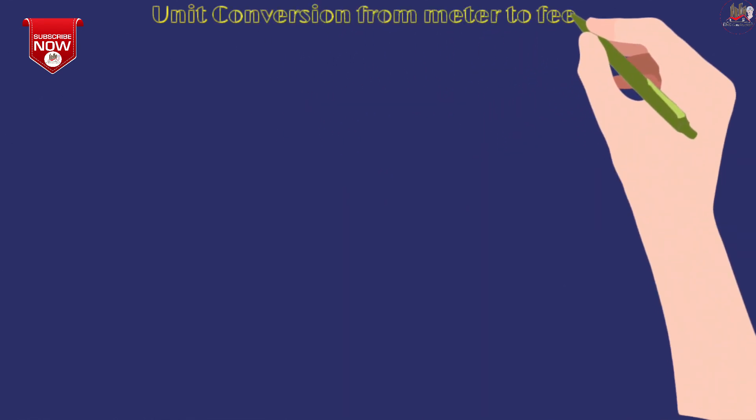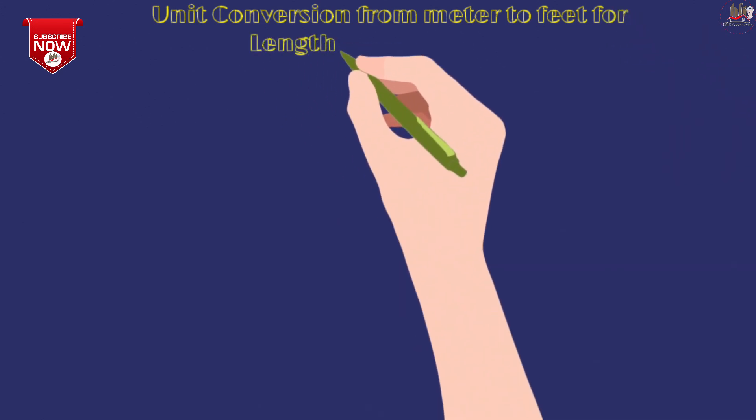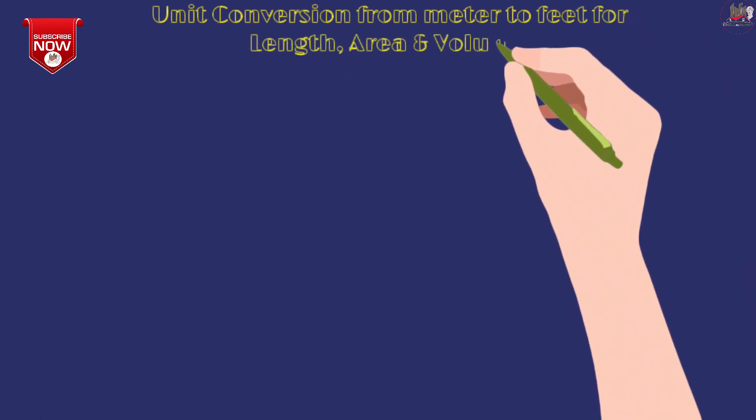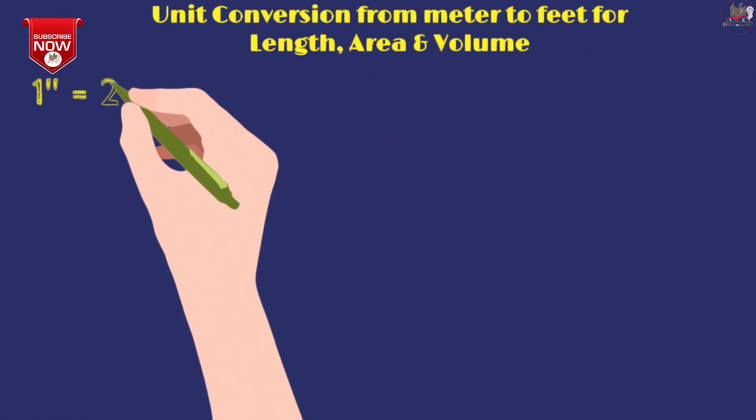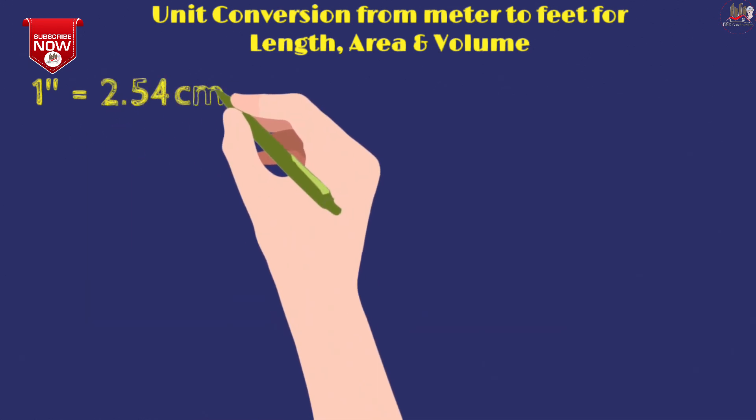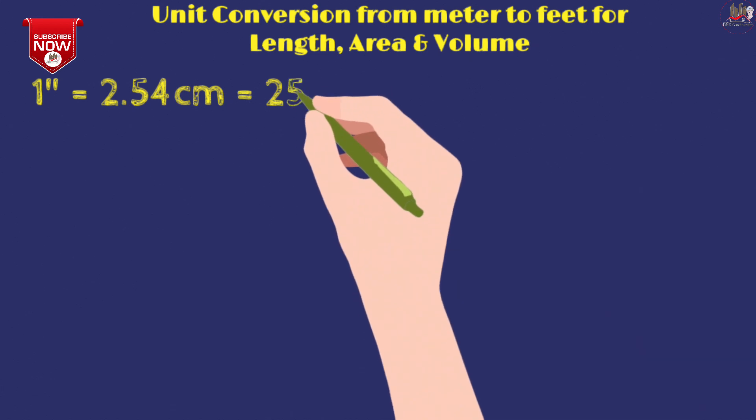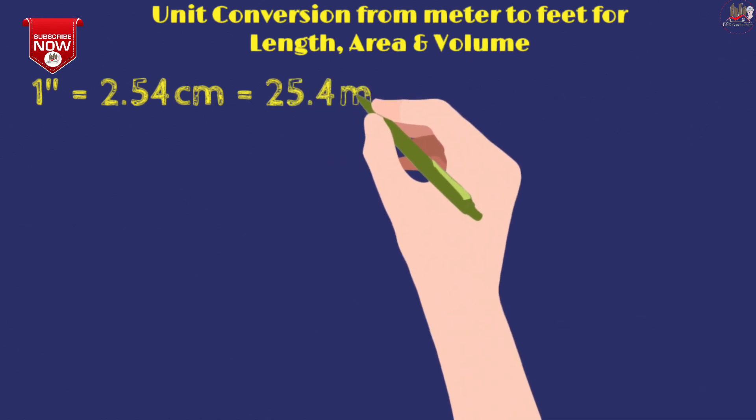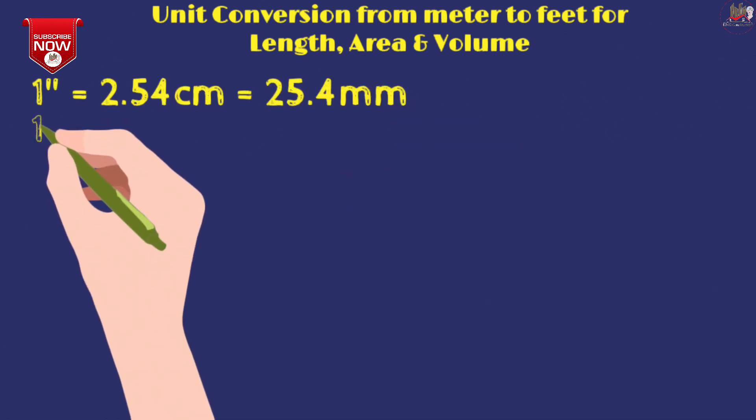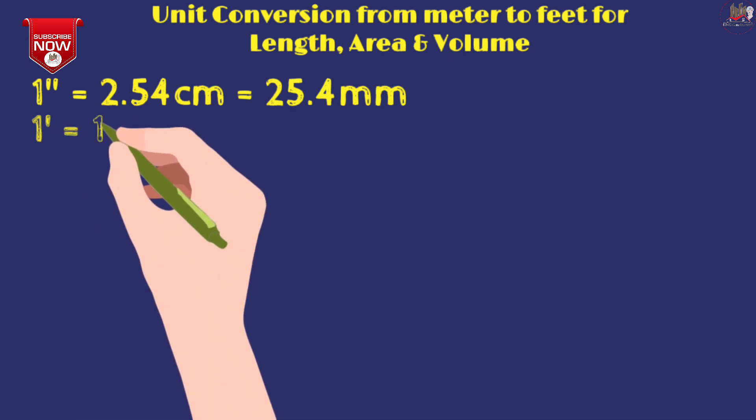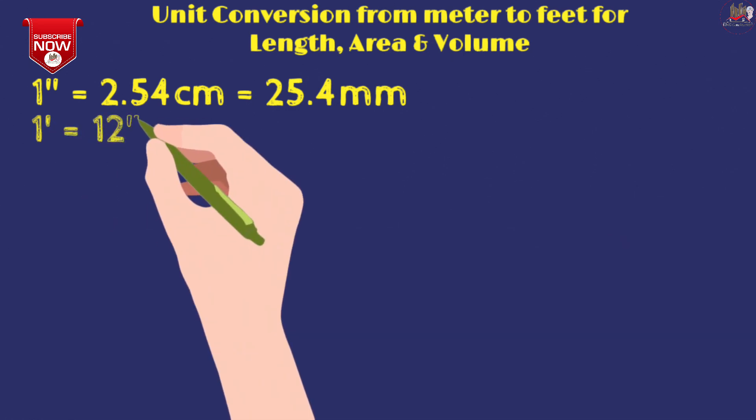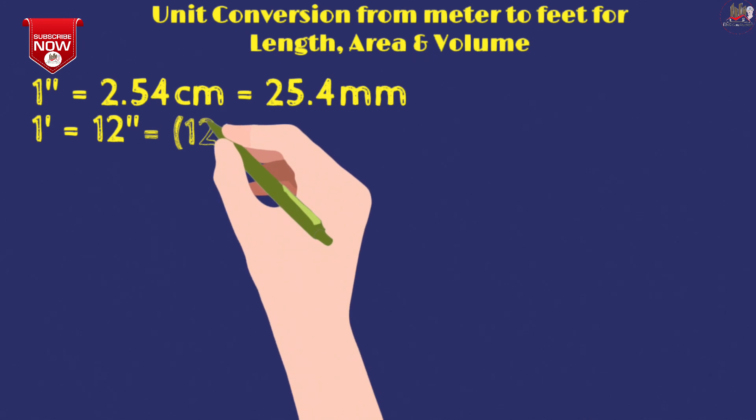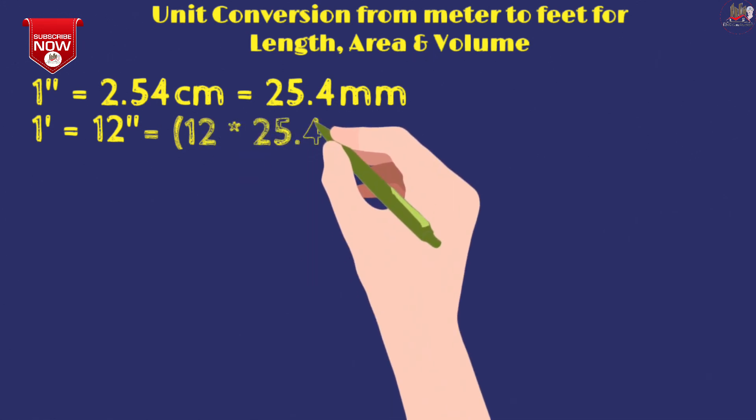Every civil engineer must know how to convert this basic unit conversion. 1 inch is 2.54 cm, and if we convert to millimeters, 25.4 mm. 1 foot is 12 inches, and if we convert this into centimeters or millimeters, we have to multiply 12 by 25.4, so this comes to 304.8 mm.